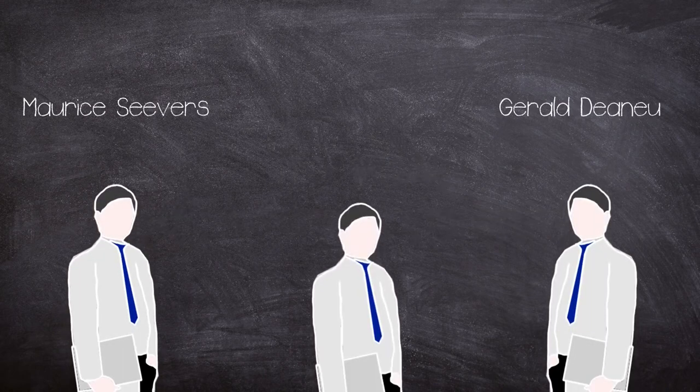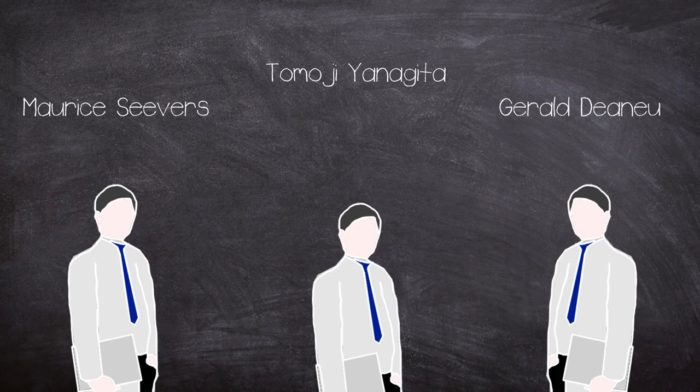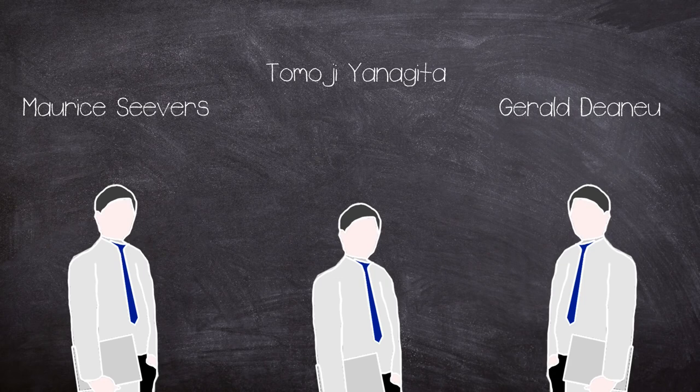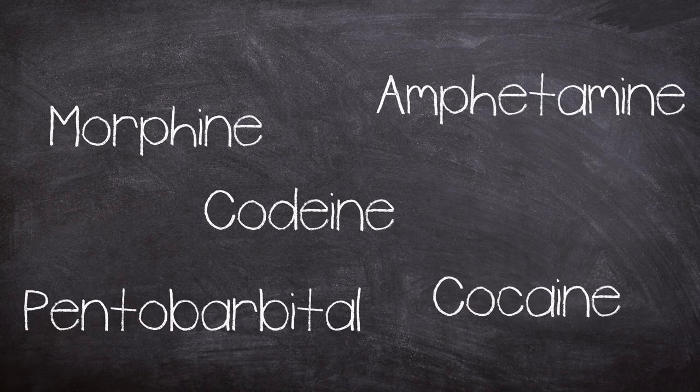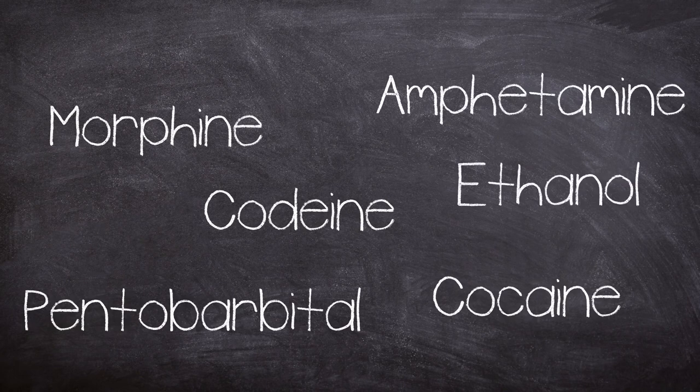Seavers teamed up with another two scientists, Gerald Diano and Tomojo Yanagita, and planned the experiment to take place at Michigan University. The substances to be explored were morphine, codeine, cocaine, amphetamine, pentobarbital, ethanol, and caffeine.